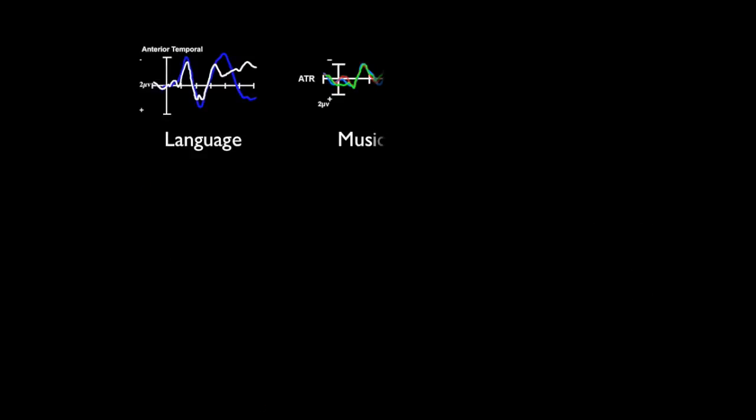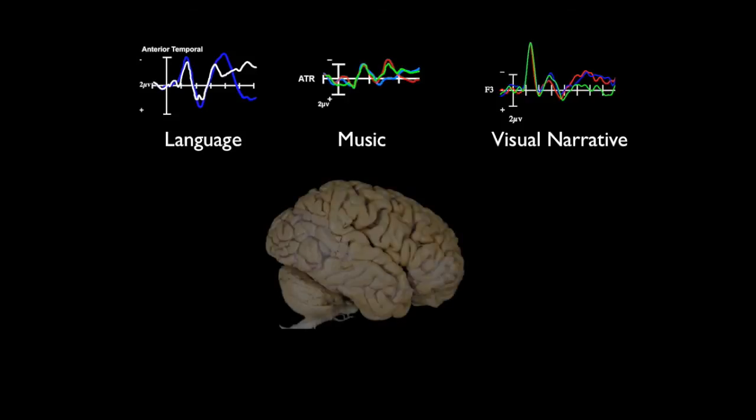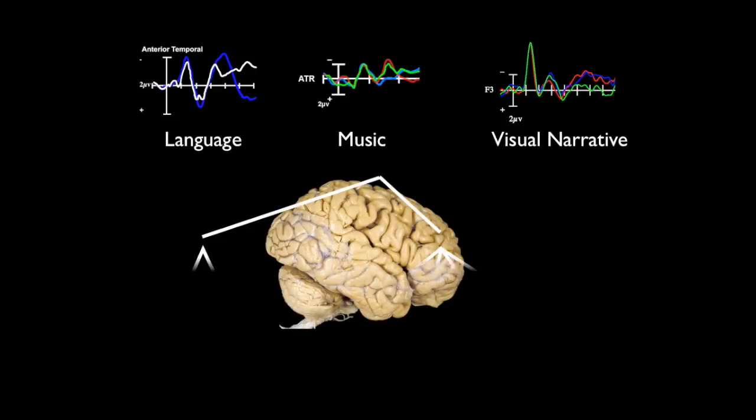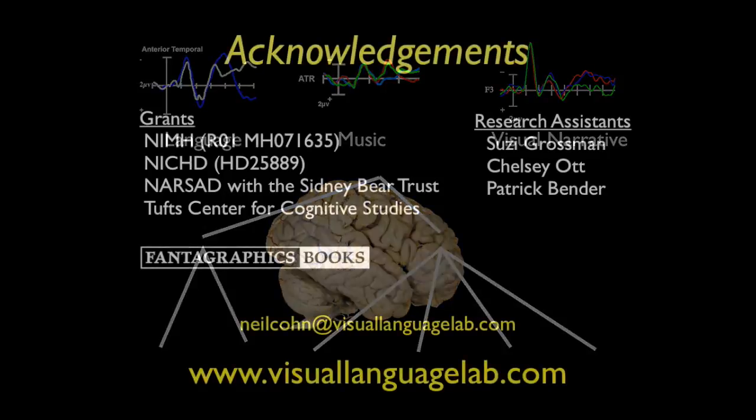Finally, because similar waveforms have now appeared to the violation of grammar across language, music, and visual narratives, we believe this provides evidence that the brain relies on similar mechanisms in the processing of grammar across domains. Thank you.